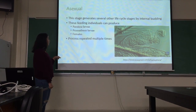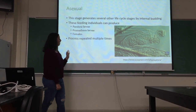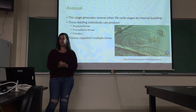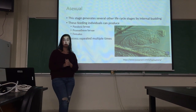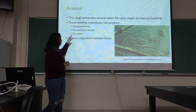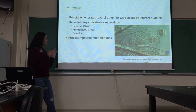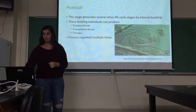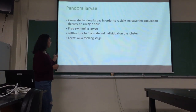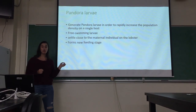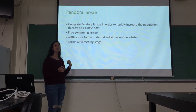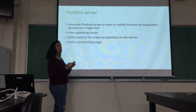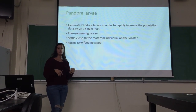The asexual phase generates many feeding individuals through internal budding. Internal budding occurs inside the trunk and produces free-swimming stages: the Pandora larvae, the Prometheus larvae, and females. Internal budding can happen multiple times. The Pandora larvae is generated to rapidly increase the population density on a single host. It is a free-swimming stage but usually settles close to the maternal individual on the lobster, where it then forms a new feeding stage.